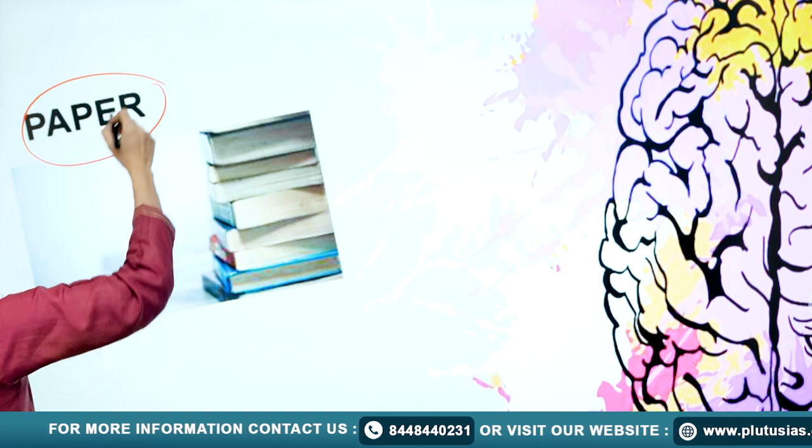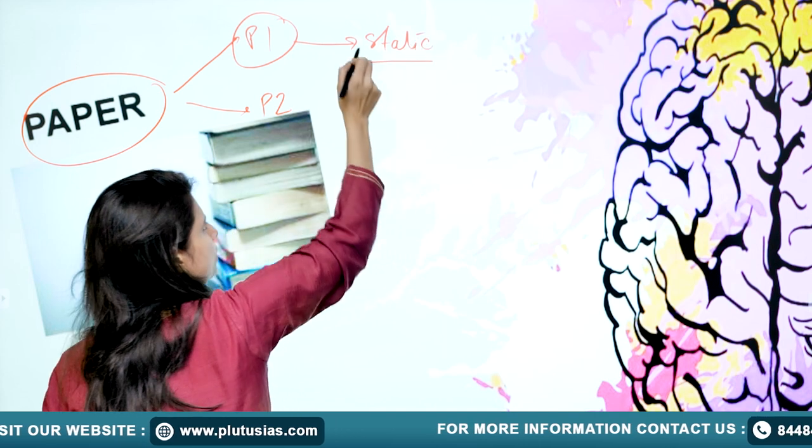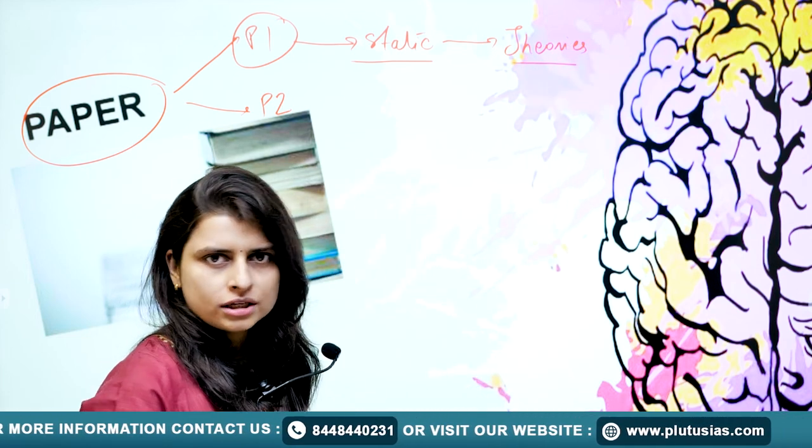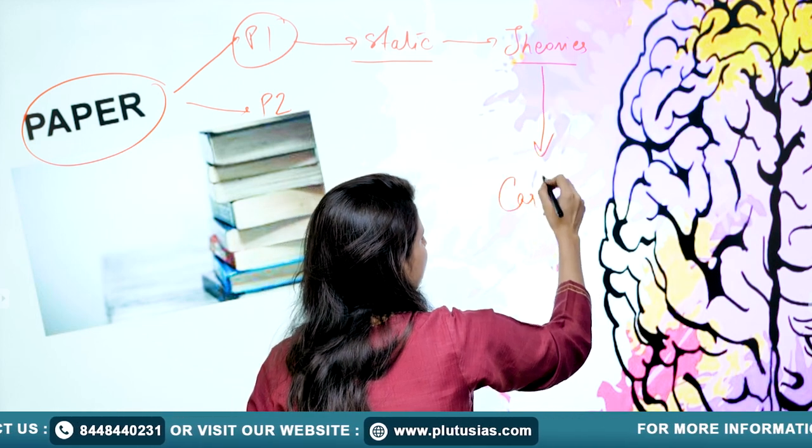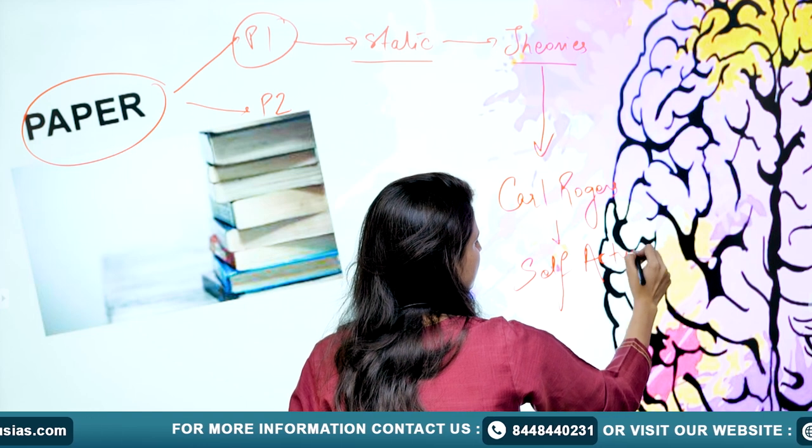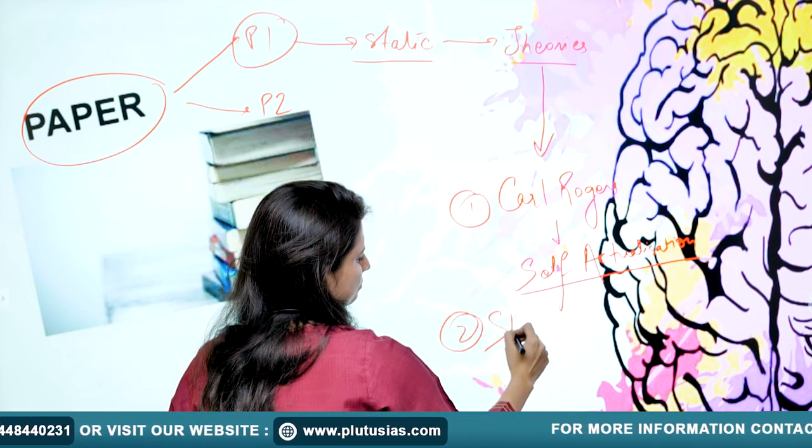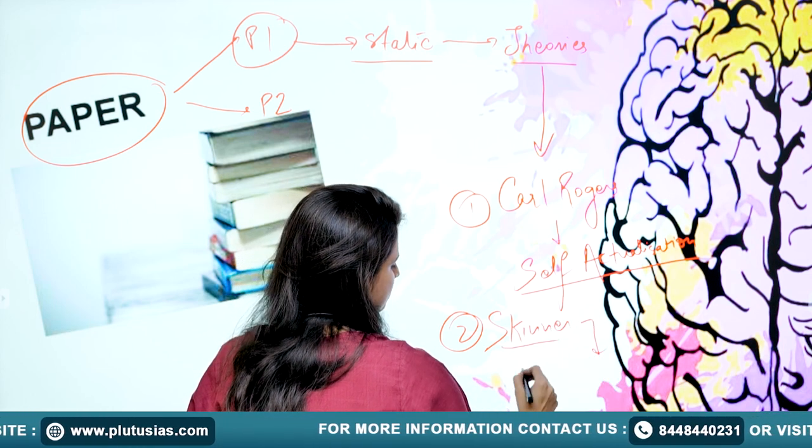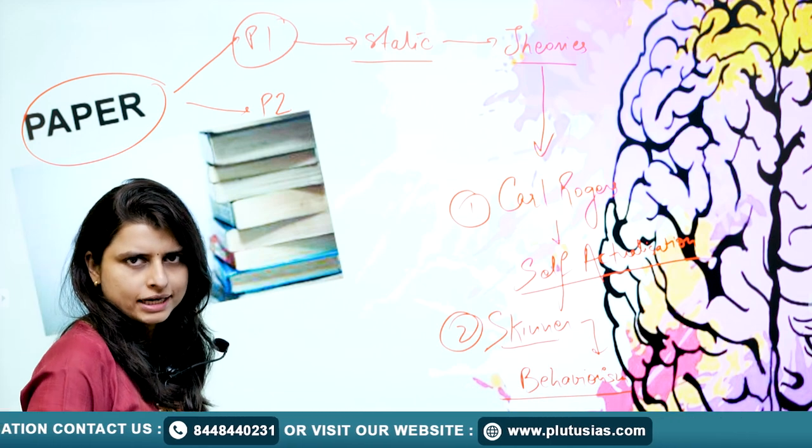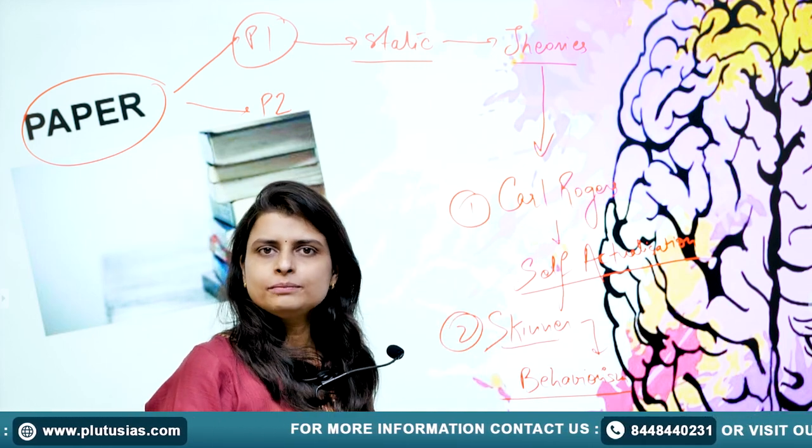After this, what you need to focus on is the paper. We have two papers: Paper 1 and Paper 2. Paper 1 is more static portion. Here, whatever theories you have read, you will be talking about these theories. You will be talking about various psychologists. For example, one such theory is Carl Rogers' theory of self-actualization. Another theory, for example, is Skinner's theory that talks about behaviorism. Likewise, we have multiple theories for psychology. For Paper 1, you have to have a very good knowledge about these theories. That will help you in building your scores.